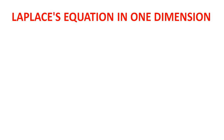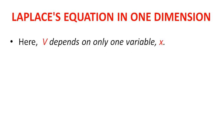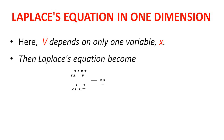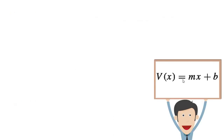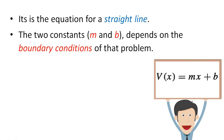Laplace equation in one dimension: here V depends on only one variable x. Then the Laplace equation becomes d²V/dx² = 0. Its solution is given by V = mx + b, which is the equation of a straight line. The two constants m and b depend on the boundary conditions of the problem.